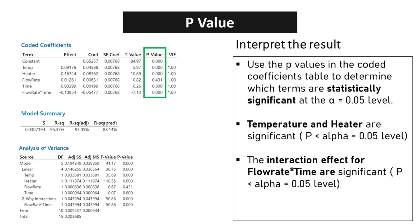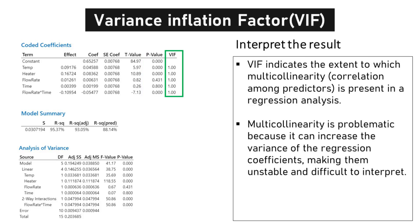In the study, it was found that both temperature and heater have a significant impact, with a p-value less than the alpha level of 0.05. Additionally, the interaction effect for flow rate and time was also found to be significant, with a p-value less than 0.05. Multicollinearity, as measured by the Variance Inflation Factor (VIF), is a critical consideration in regression analysis. High VIF values indicate a strong correlation among predictors, which can lead to unstable and unreliable regression coefficients.